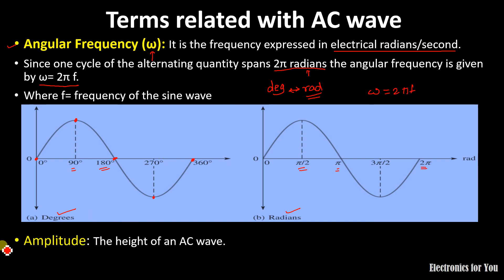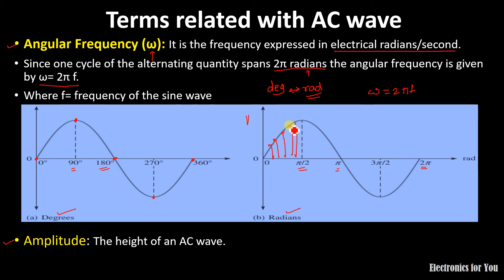The last term related with AC is amplitude. It is the height of the AC wave, which also indicates the magnitude. If it is a voltage wave, this value will indicate voltage, and if it is a current wave, these values are of current. Thank you.